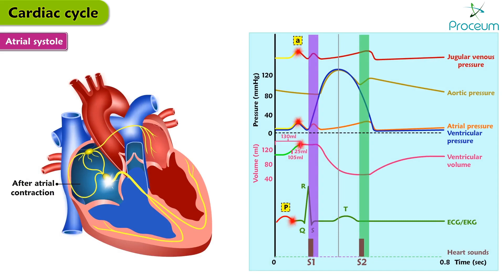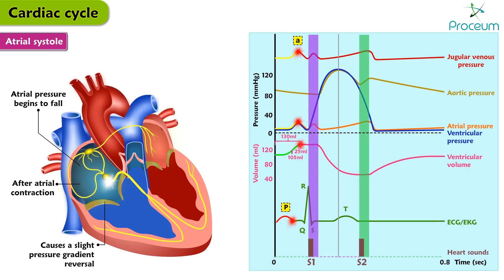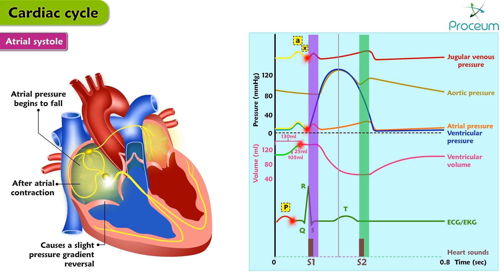After atrial contraction is complete, the atrial pressure begins to fall, which causes a slight pressure gradient reversal across the atrioventricular valves. This fall in atrial pressure following the peak of the A wave is termed the X descent, seen on the JVP. As the pressures within the atria fall, the atrioventricular valves float upwards toward their pre-closure position.